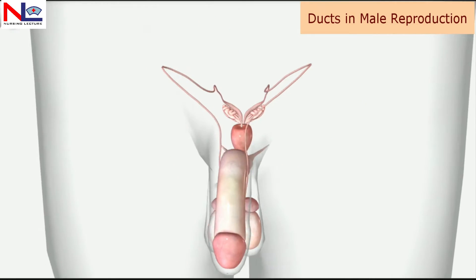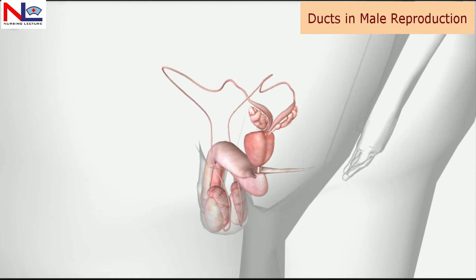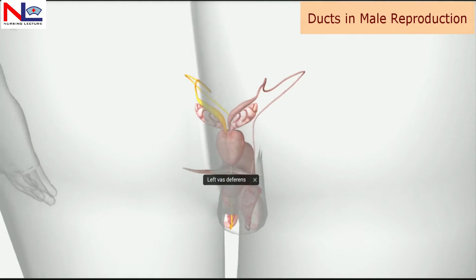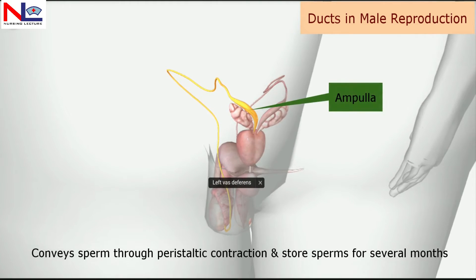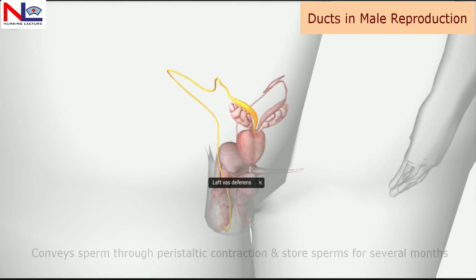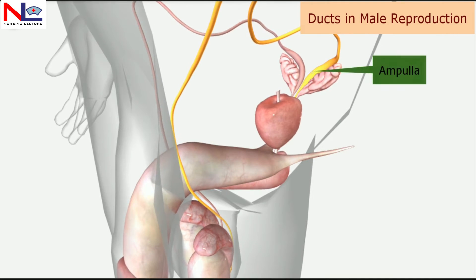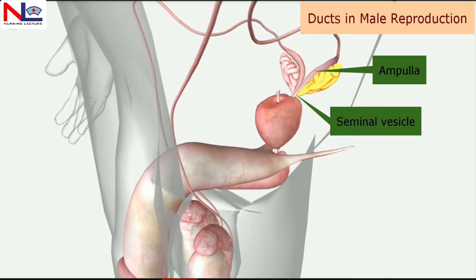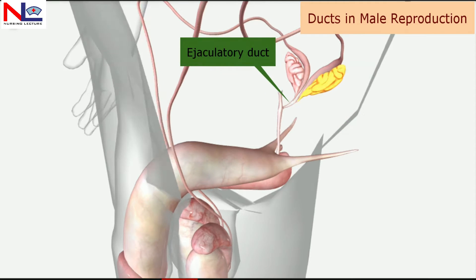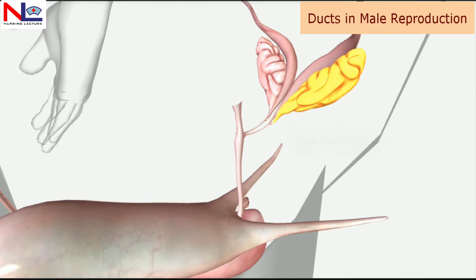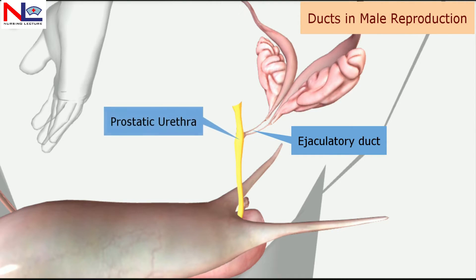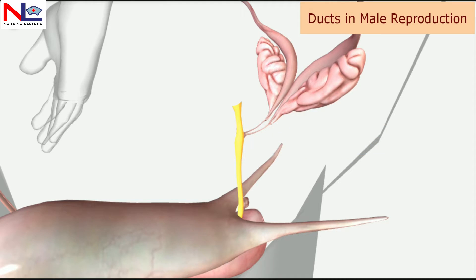The dilated end portion of the vas deferens is the ampulla. It conveys the sperm through peristaltic contraction and stores them for several months if ejaculation does not occur. The dilated region of the vas deferens together with the seminal vesicle duct forms the ejaculatory duct, which then drains sperm into the prostatic urethra, lying internal to the prostate.